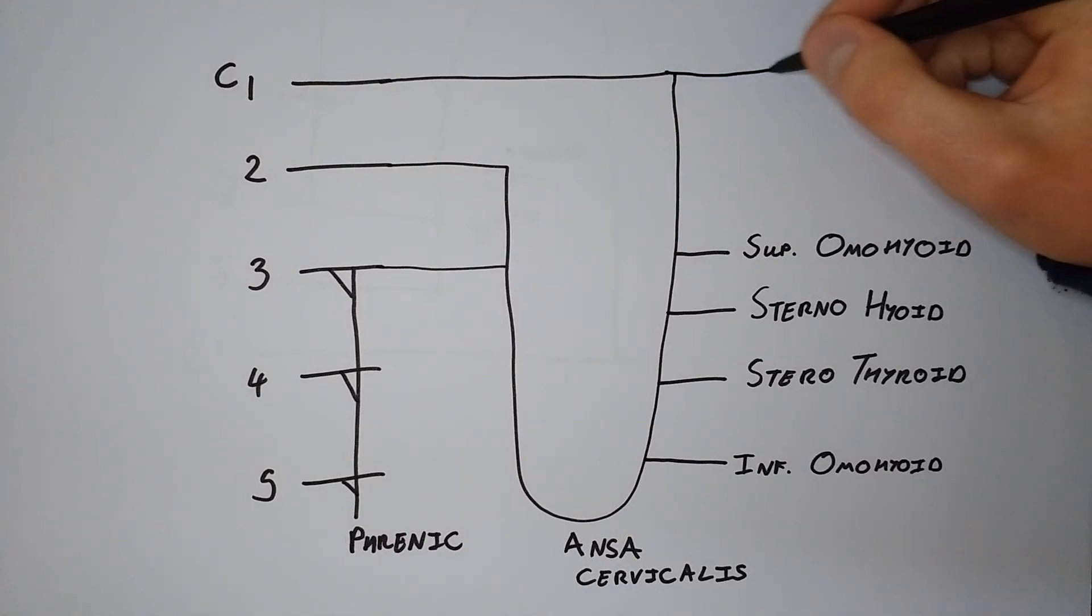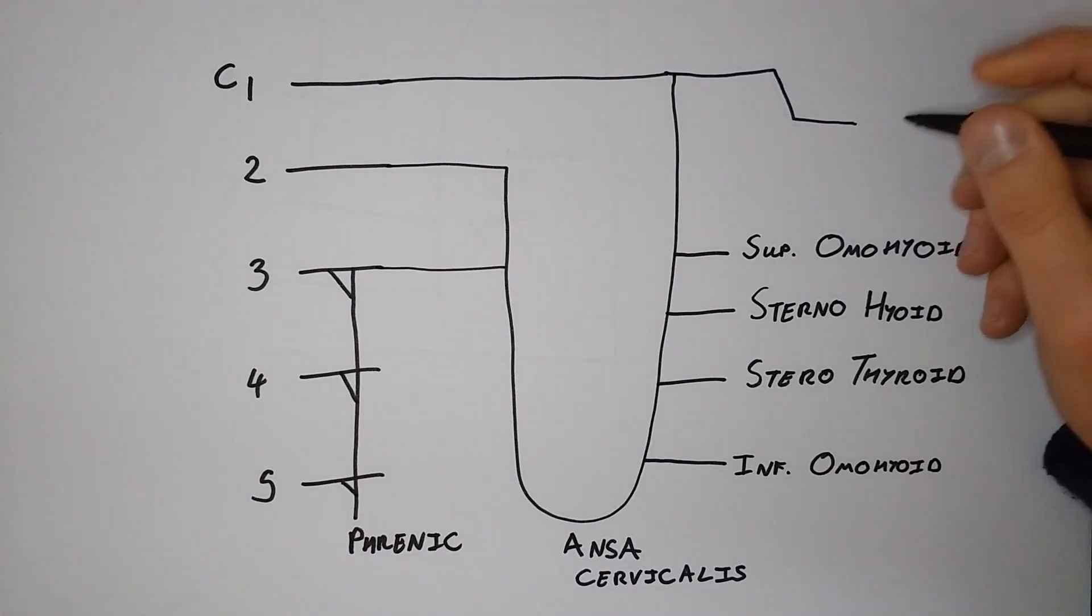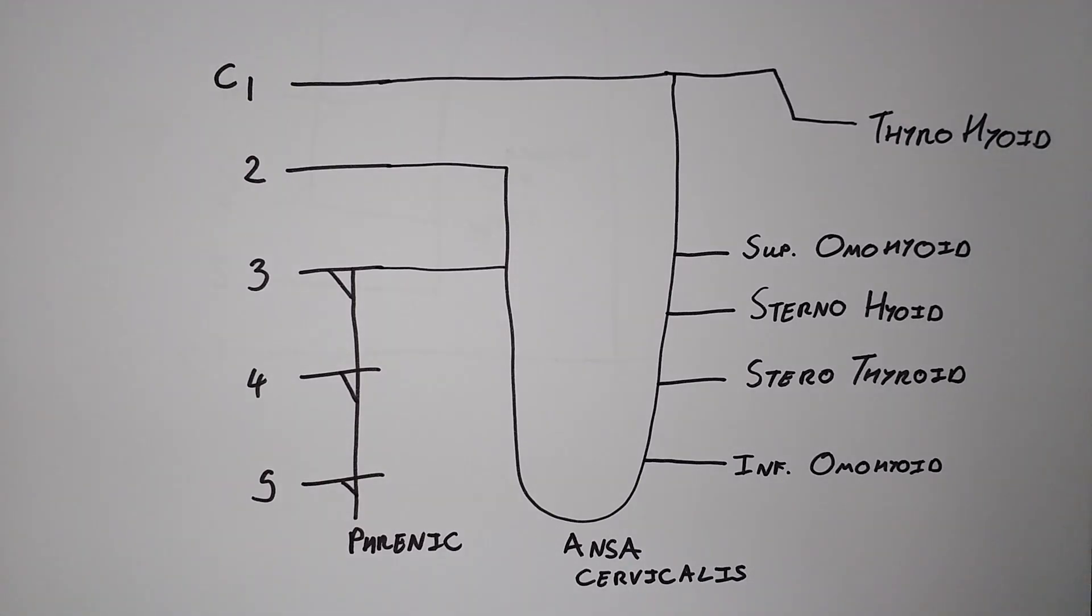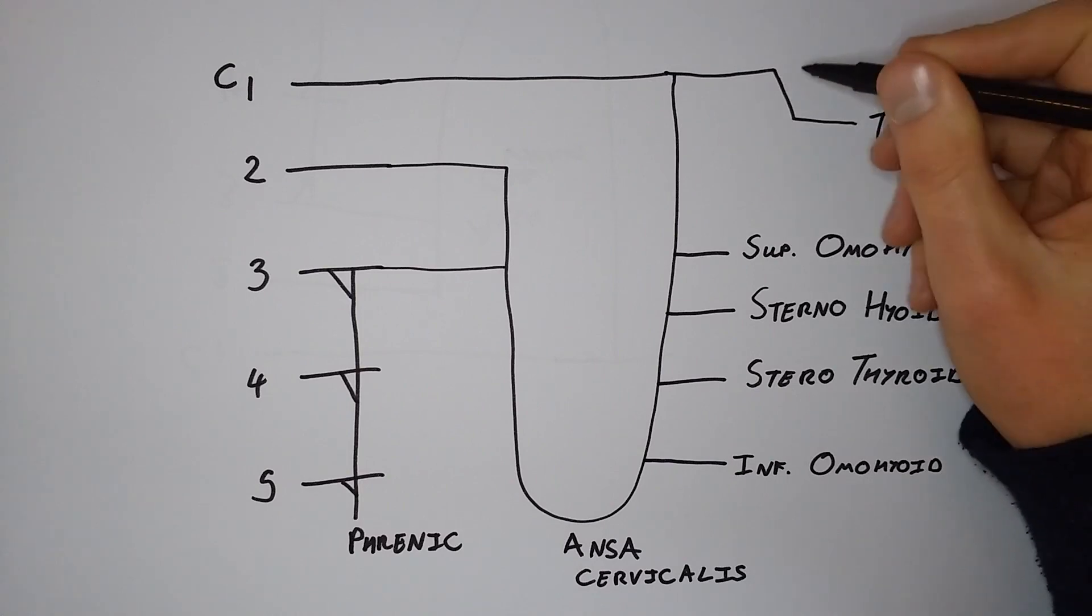If we have a muscle from the sternum to the thyroid cartilage and a muscle from the sternum to the hyoid bone, then the one that we must be missing is the one that completes this triangle: a muscle going from the thyroid cartilage to the hyoid bone. This is powered by the thyrohyoid nerve. So we've done our infrahyoids.